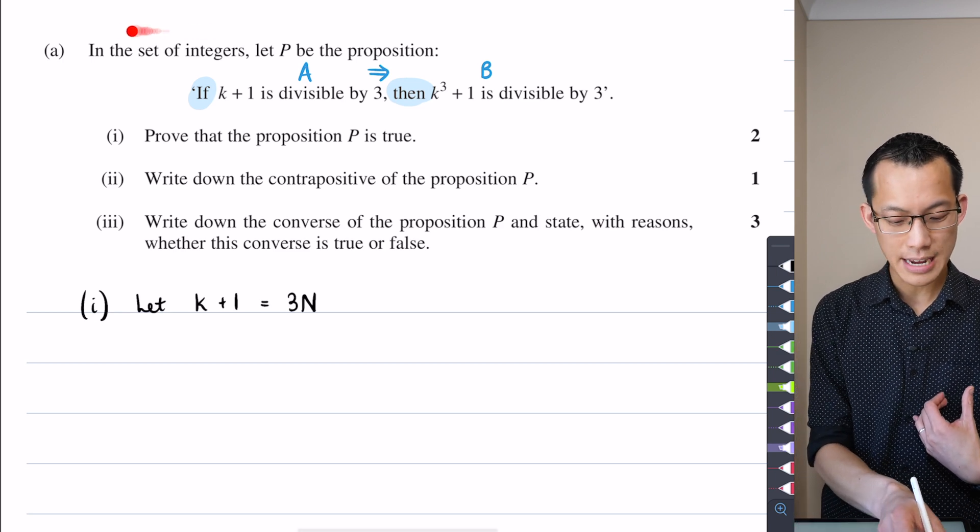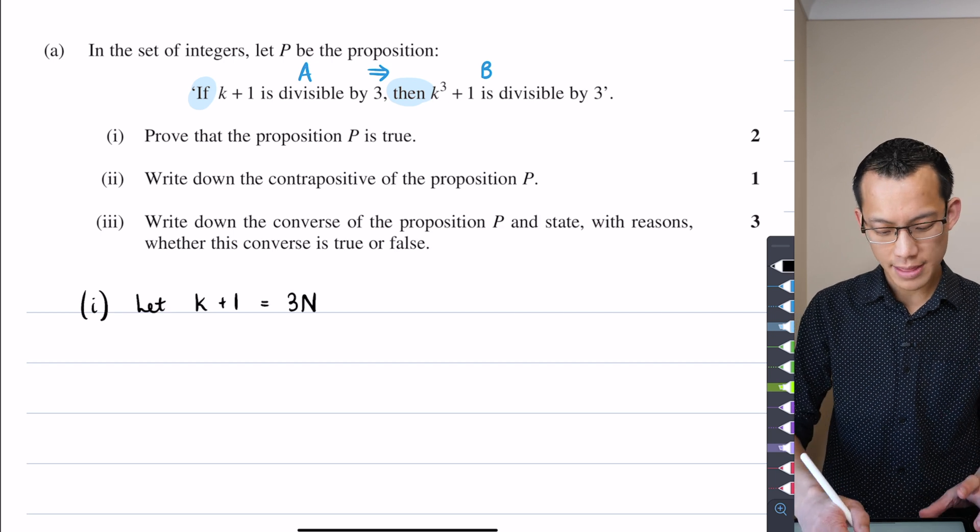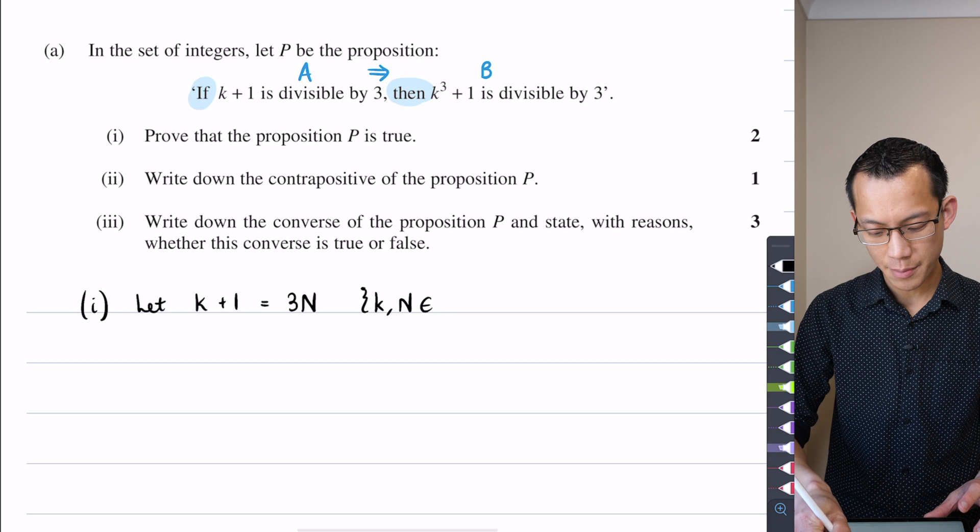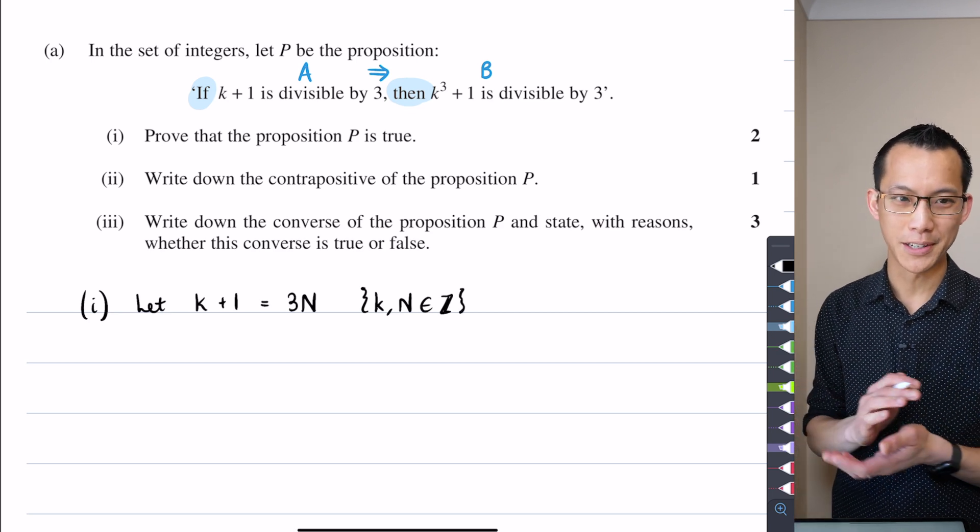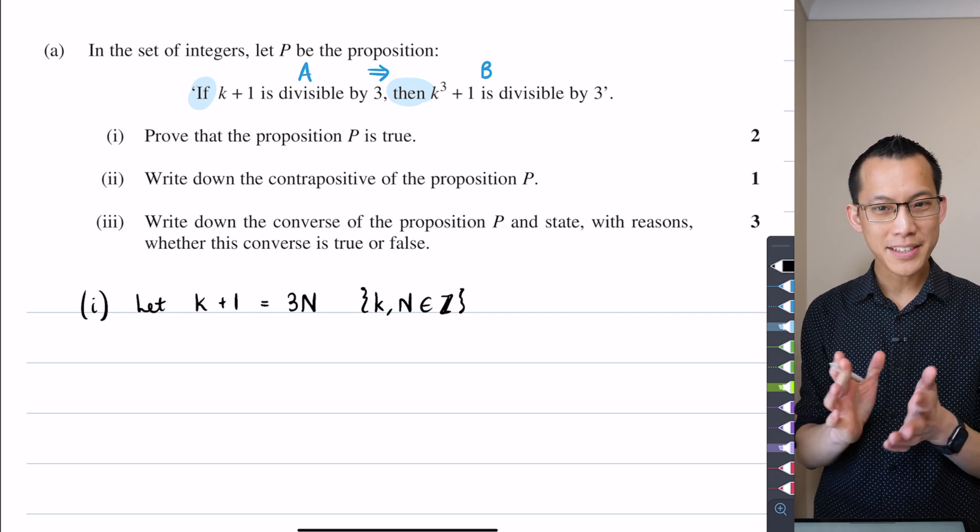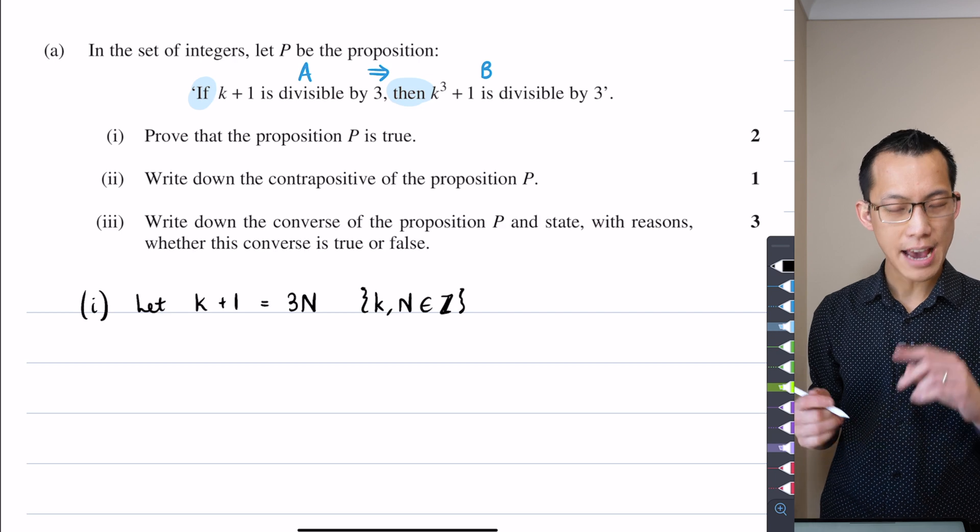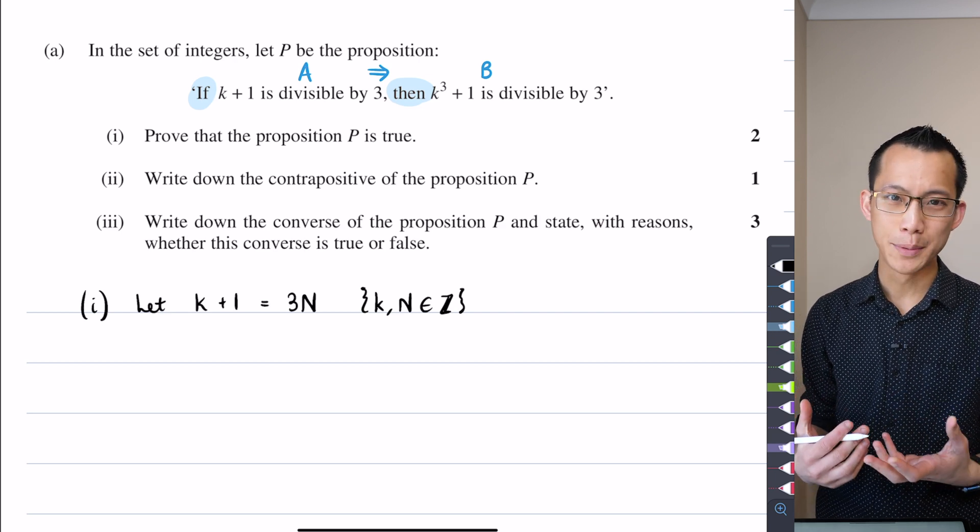They do say right at the beginning, in the set of integers, so that's kind of just applied to everything. But I think it's important to actually say it in our proof because I'm going to have to appeal to this fact later on to do some of my reasoning. So I've made that statement and this is the A part, right? k plus 1 is divisible by 3 and I have to somehow get to the B part, which has a k cubed plus 1.